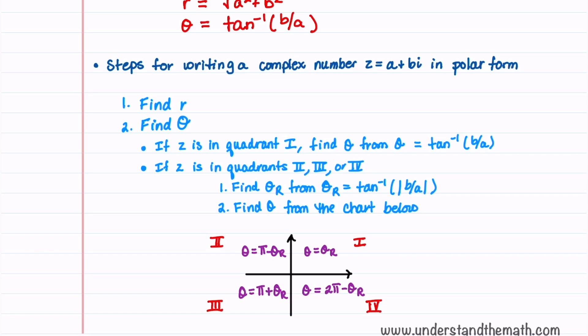Let's now go over the two steps we need to complete to write a complex number in polar form. The first step is to find r. The second step is to find theta. If our complex number is in quadrant 1, then theta equals the inverse tan of b over a. If our complex number is in quadrants 2, 3, or 4, we have two steps: first find the reference angle, which equals the inverse tan of the absolute value of b over a, and then find theta from our chart.